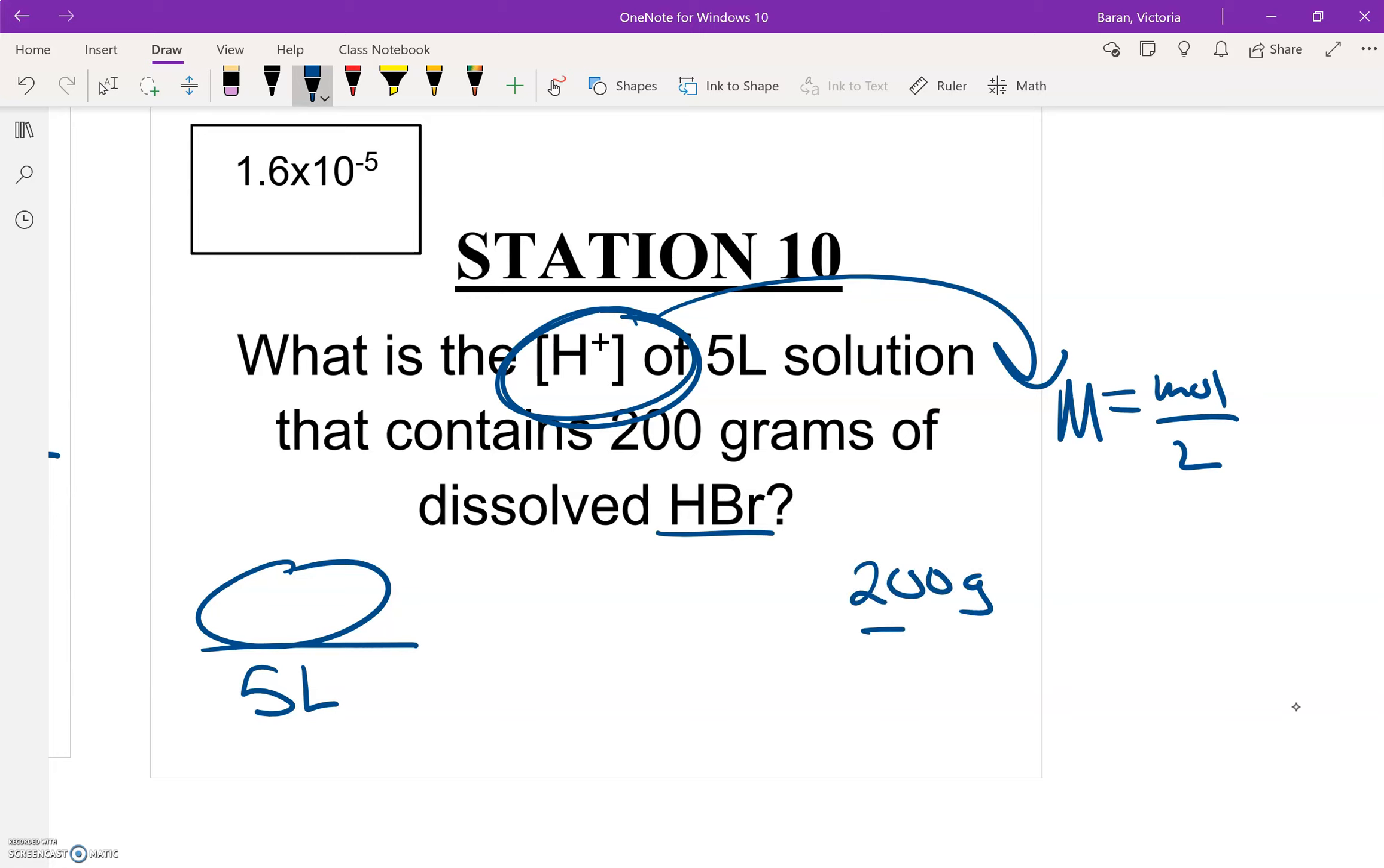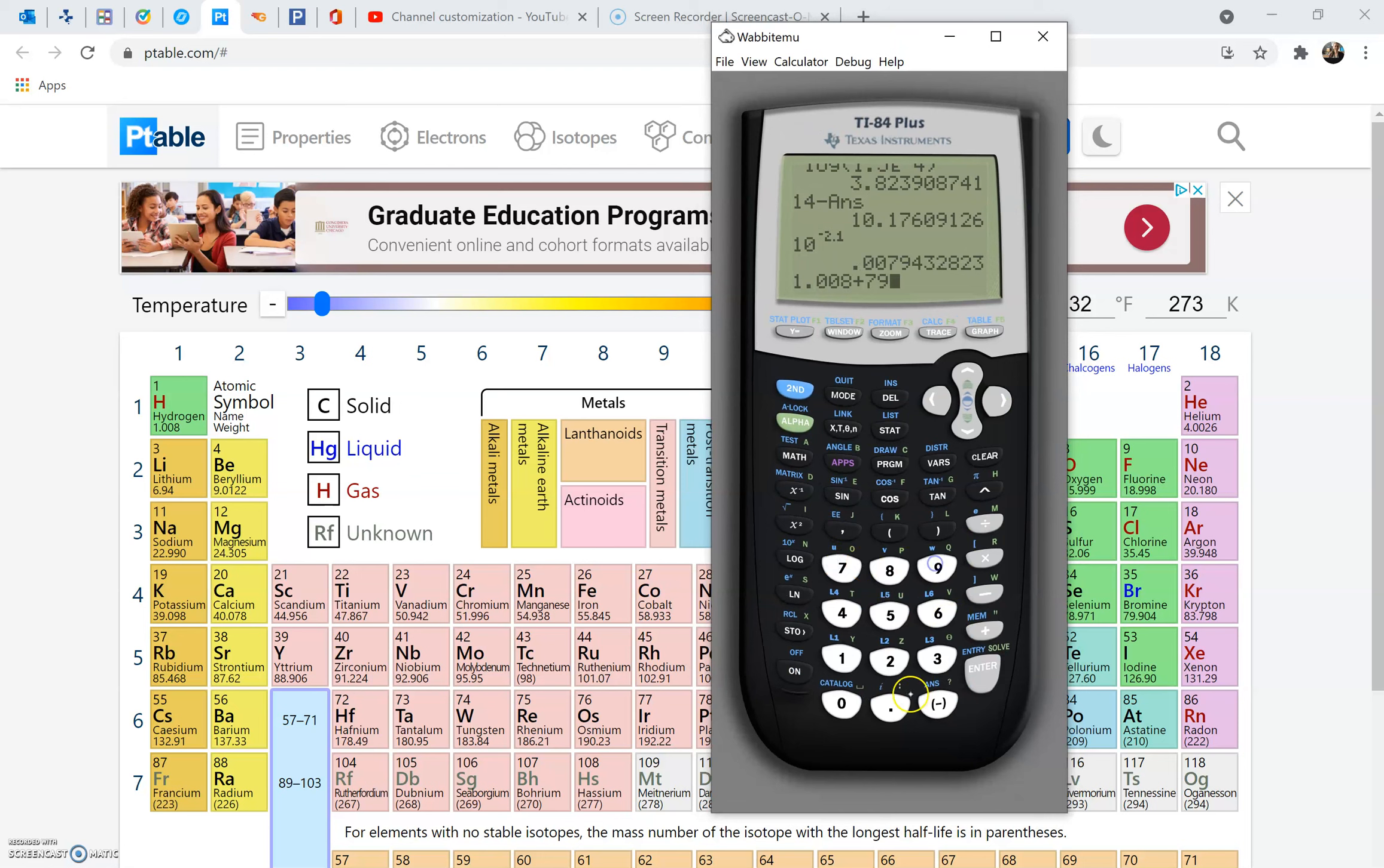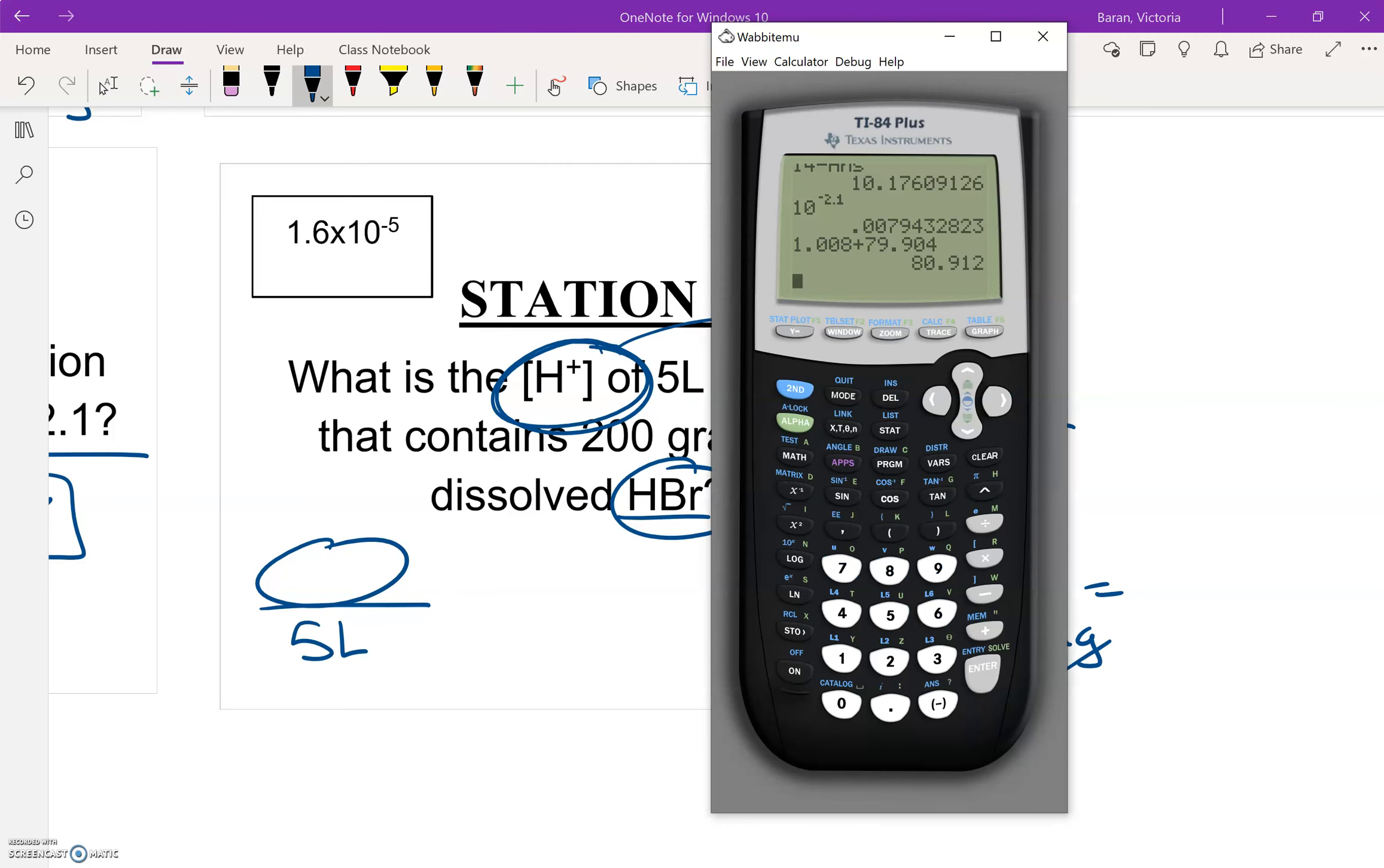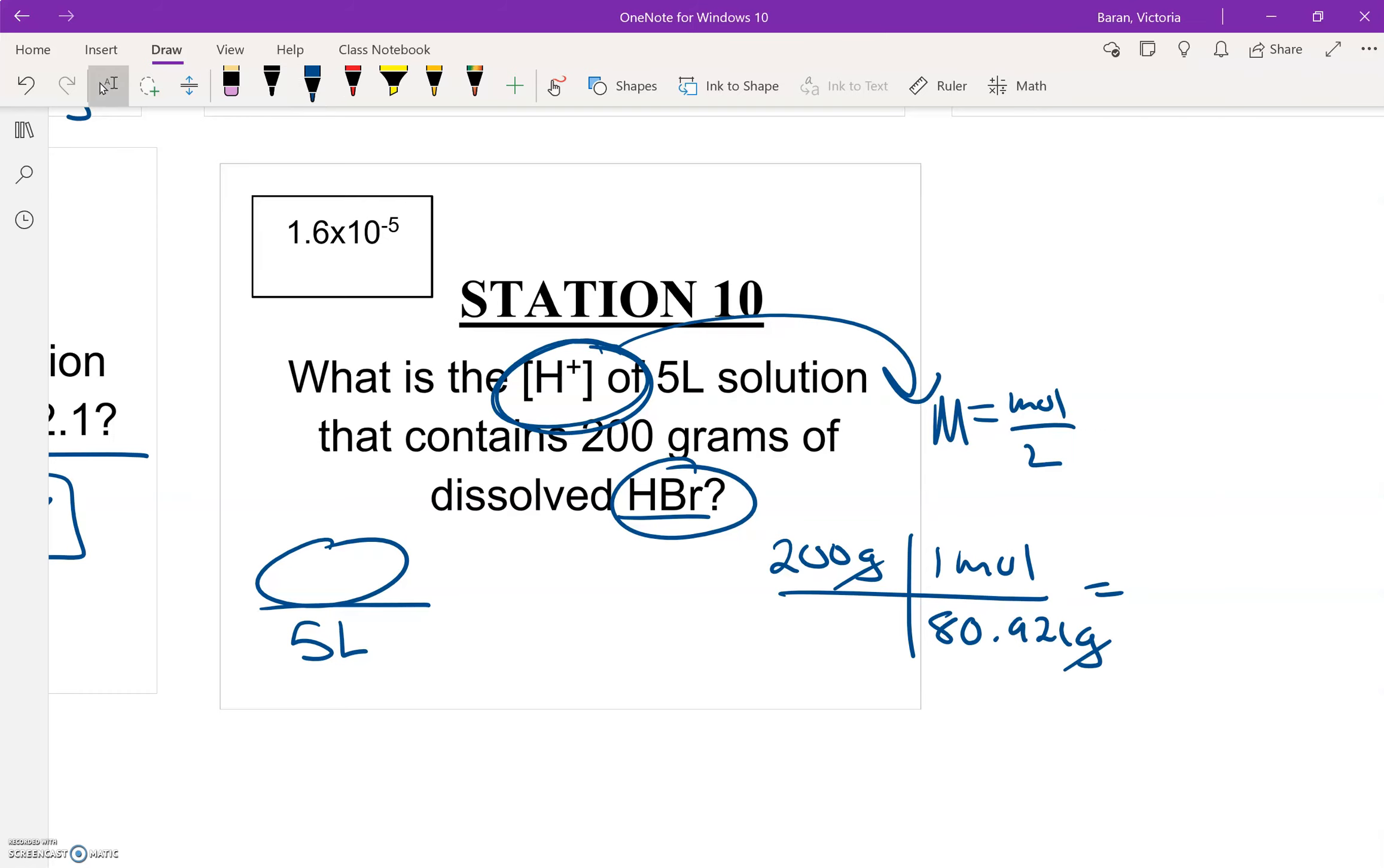So in order to get grams into moles, we're going to have to set up a picket fence, and we're also going to have to find the molar mass of HBr. So I have my periodic table. So H is 1.008 plus Br is 79.904, which is 80.921. So remember, that's 80.921 grams per mole. So that goes in the bottom. One mole goes in the top. Grams would cancel. We're going to do 200 divided by. I'm going to use the ANS, so I don't have to type that in again. And I'm going to get 2.47.